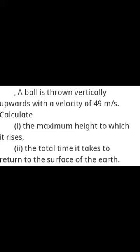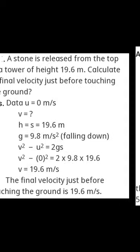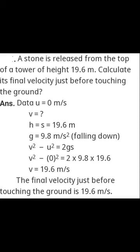Here are some numerical questions. A ball is thrown vertically upward with a velocity of 49 m/s. Calculate the maximum height to which it rises and the total time. At maximum height, final velocity = 0. Using the formula v² − u² = 2gs, you can calculate and find that s = 122.5 meters. The time to go up is 5 seconds, and time to come back is also 5 seconds, so total time = 10 seconds. Similarly you can solve other numerical questions yourself.